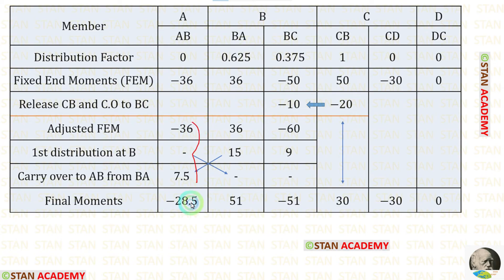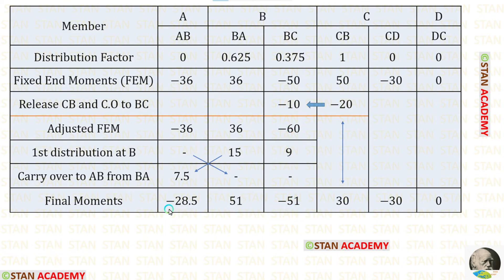We add all values to find the final moments. Adding gives M_AB = −28.5 kNm, M_BA = 51 kNm, and M_BC = −51 kNm. All final moments in this analysis have now been calculated.